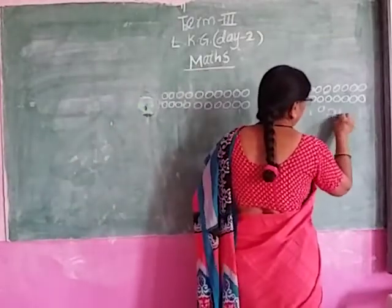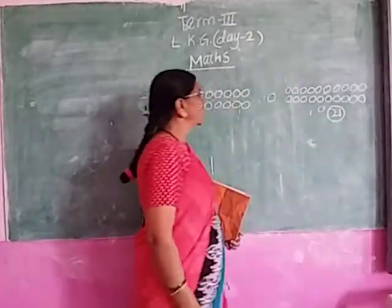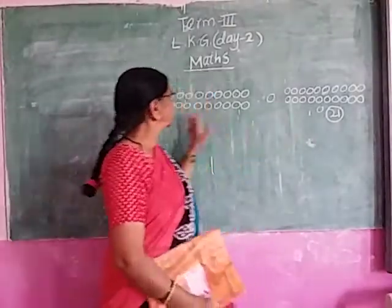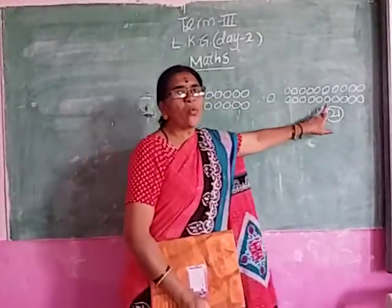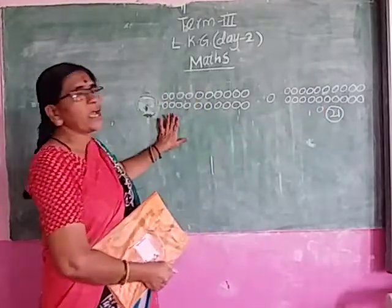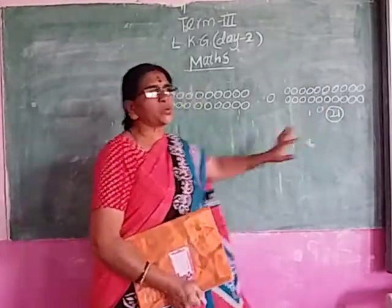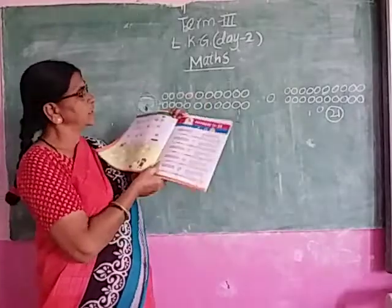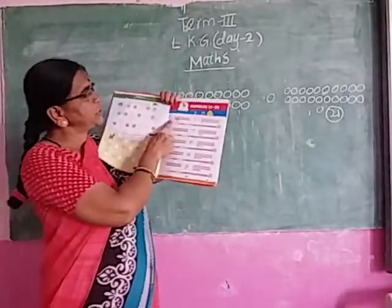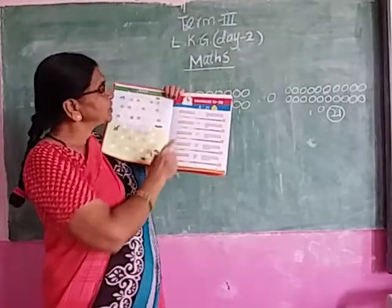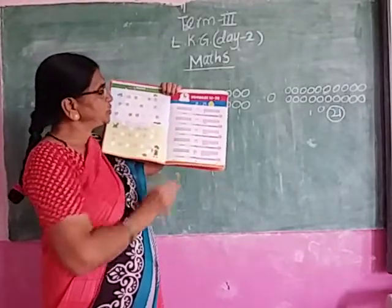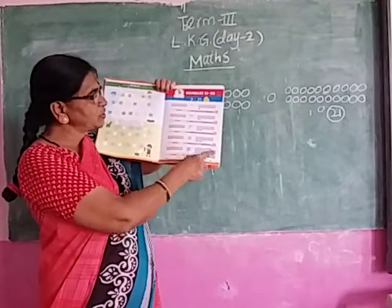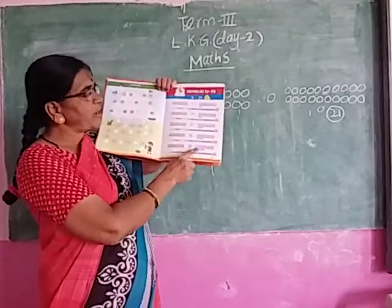Like this. 20 and 2 — 22. See. 20 and 1 — 21. 20 and 2 — 22. 20 and 3 — 23. 20 and 4 — 24. 20 and 5 — 25.